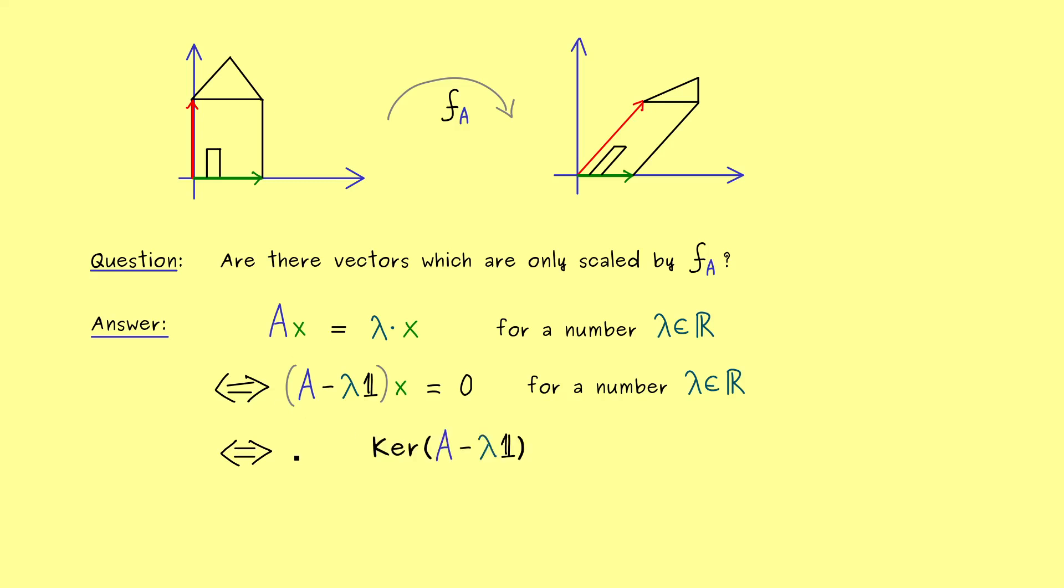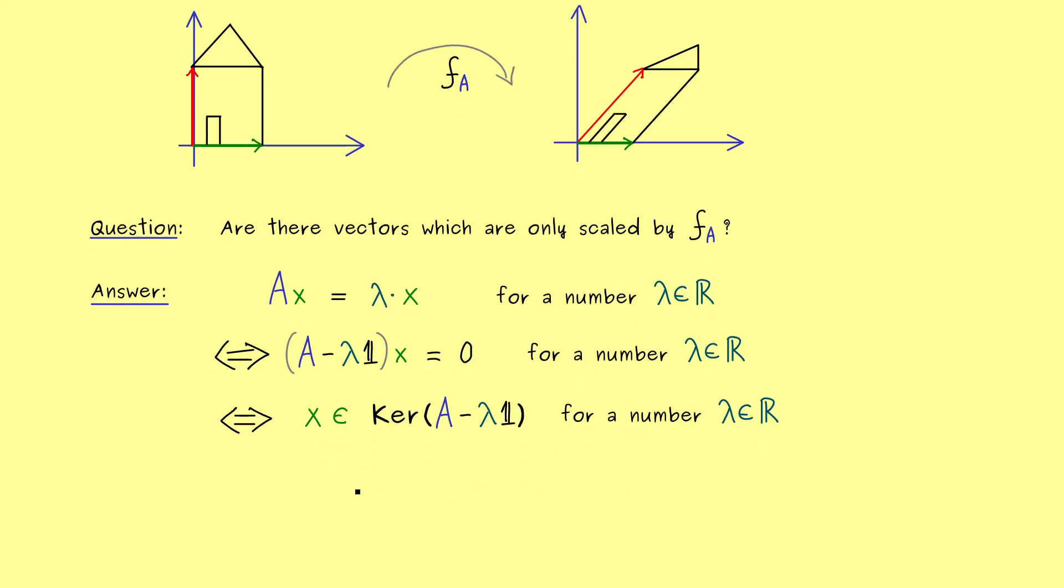So please recall, the kernel of a matrix just represents all the vectors that are sent to zero by the matrix. In other words, our original equation just means that x lies in the kernel of this new matrix. Okay, so now this is something you really should remember, because we will use it a lot for calculations later.